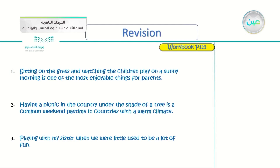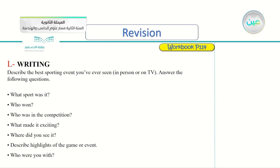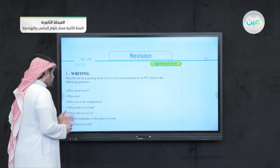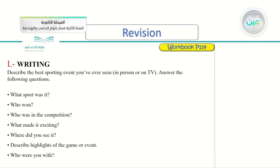Exercise L — writing: describe the best sporting event you've ever seen in person or on TV. Answer the following questions: What sport was it? Who won? Who was in the competition? What made it exciting? Where did you see it? Describe highlights of the game or event. Who were you with? Who did you support?